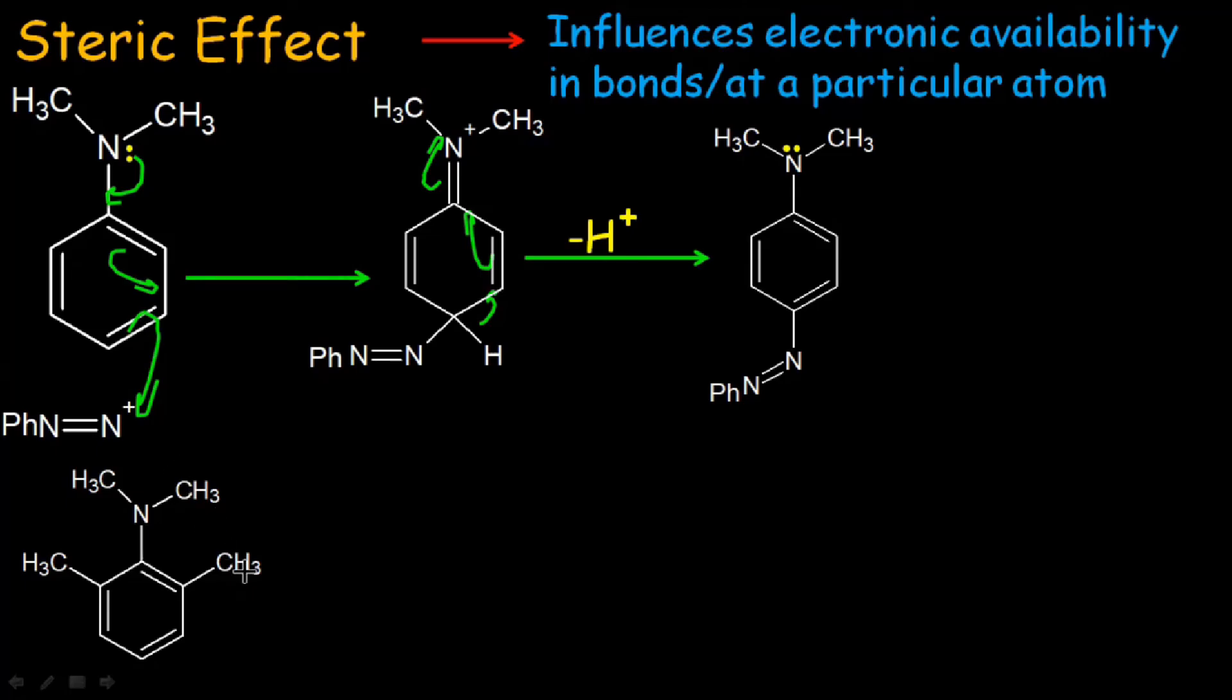The two methyl groups are in close vicinity with each other and both are in plane. They repel each other and create disturbance or instability. To overcome this instability, the bond of nitrogen and carbon is rotated. This rotation makes aniline with two methyl groups out of the plane to the plane of benzene ring.